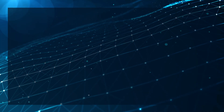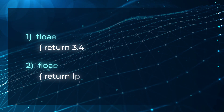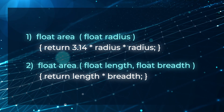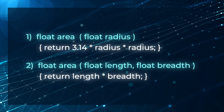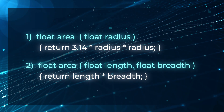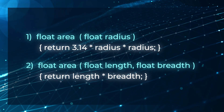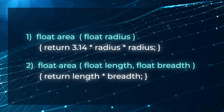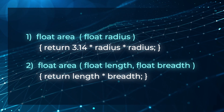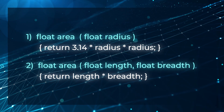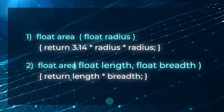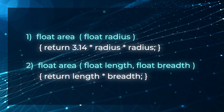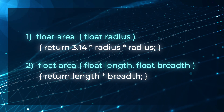Have a look at these two methods written in Java — methods are nothing but functions. The first function is named area, and the second function is also named area. But the first function finds the area of a circle, so it has only one parameter: radius. The second function, also named area, finds the area of a rectangle, so it has two parameters: length and breadth. Same word — area — but with multiple meaning. One area is for circle and one area is for rectangle.